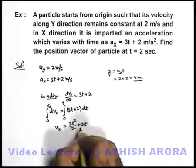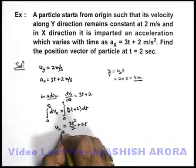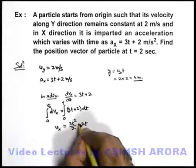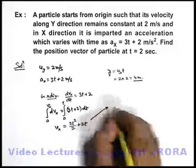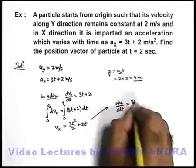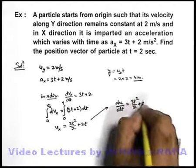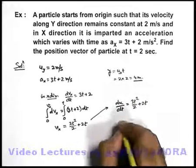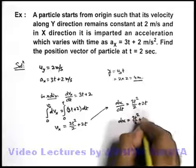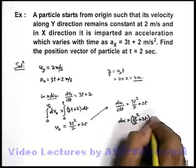This is the velocity of particle at time t in x direction. Now further to calculate the x coordinate or displacement in x direction we can further write it as dx/dt = 3t²/2 + 2t. And here we can write dx = (3t²/2 + 2t)dt.